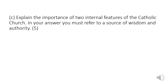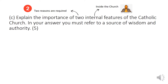The third question is a C question: explain the importance of two internal features of the Catholic Church, and in your answer you must refer to a source of wisdom and authority. You need two reasons, knowledge about the inside of the church, and must use evidence from the Bible, catechism, or key thinkers.